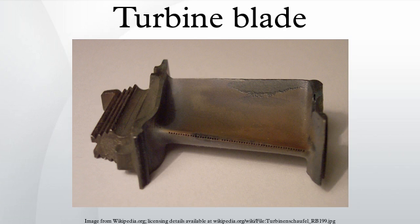Convection cooling works by passing cooling air through passages internal to the blade. Heat is transferred by conduction through the blade, and then by convection into the air flowing inside the blade. A large internal surface area is desirable for this method, so the cooling paths tend to be serpentine and full of small fins.